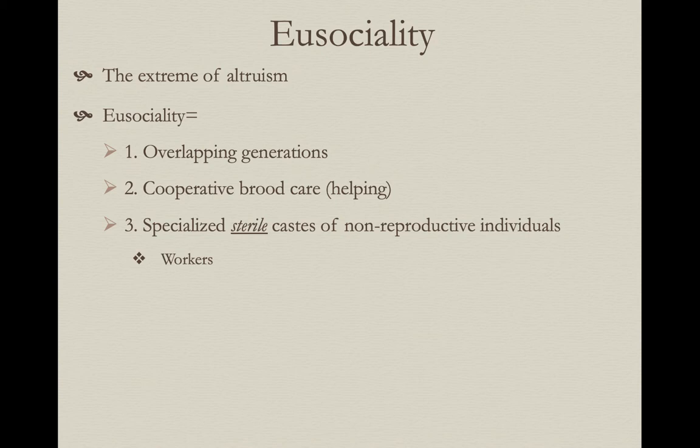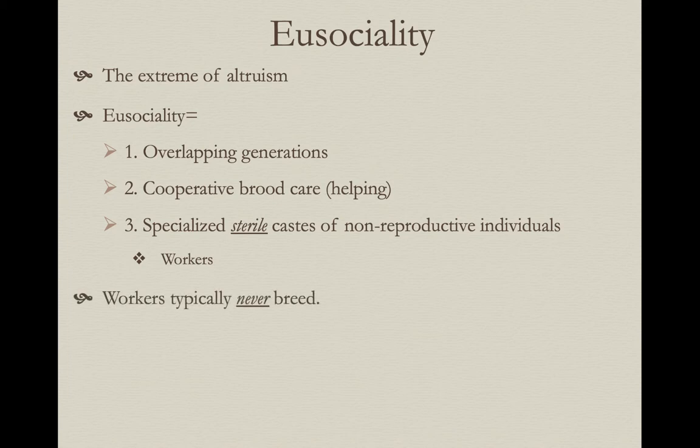What makes eusociality different is some of the individuals in the population are specialized sterile castes — individuals that are non-reproductive for their entire life and completely incapable of reproduction. We generally refer to these as workers or soldiers, depending on their task associated with the colony of eusocial organisms. What makes this eusocial is these workers or soldiers never breed. They have no ability for having direct fitness.